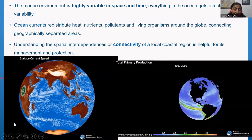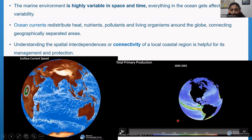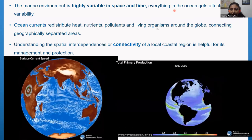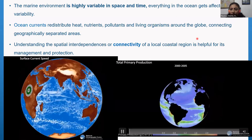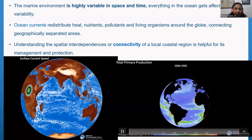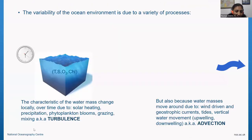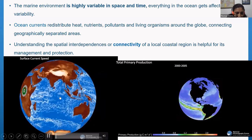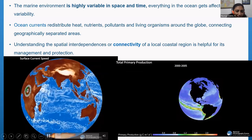The marine environment is highly variable in space and time. Here are some animations of the global MIMO model showing surface currents. Ocean currents redistribute everything in the ocean — heat, nutrients, pollution, even living organisms — and they connect geographically separated areas. Therefore, it's very important to understand the spatial interconnectedness or connectivity of local coastal regions, which can be very helpful for management and protection.